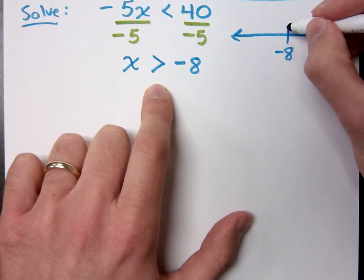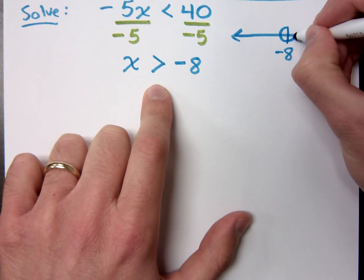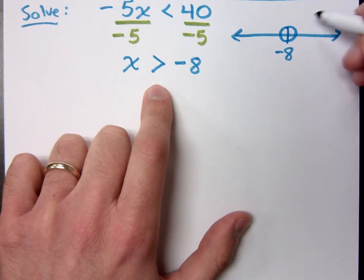What kind of circle do I have at negative 8? Open. Which way do I graph? Right. It's greater than, going out to the right.